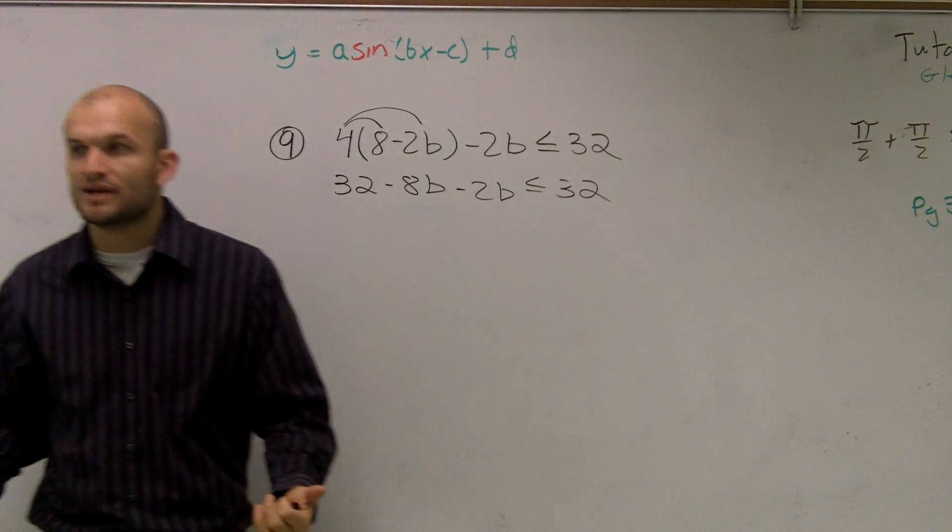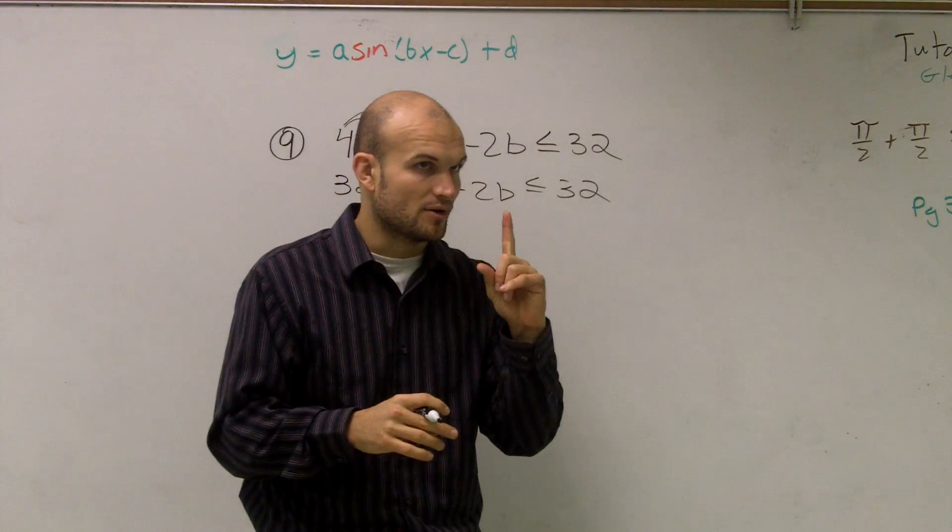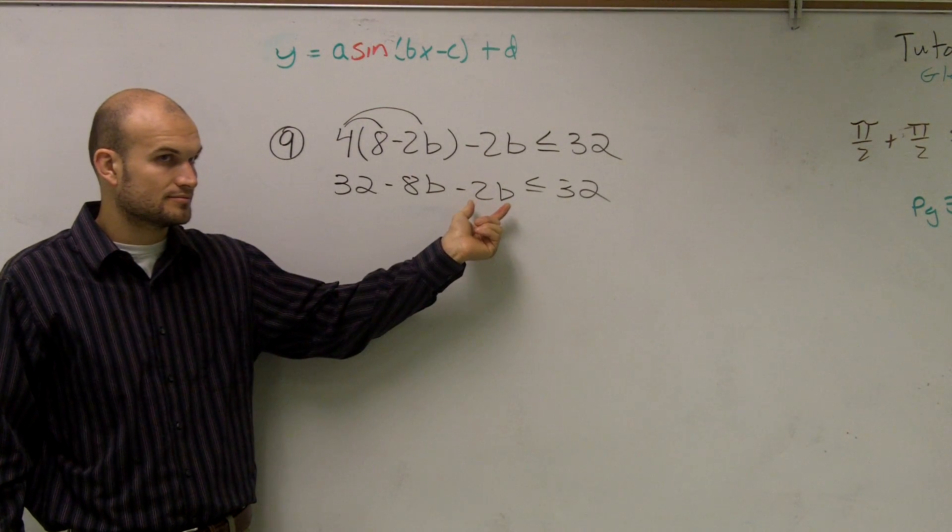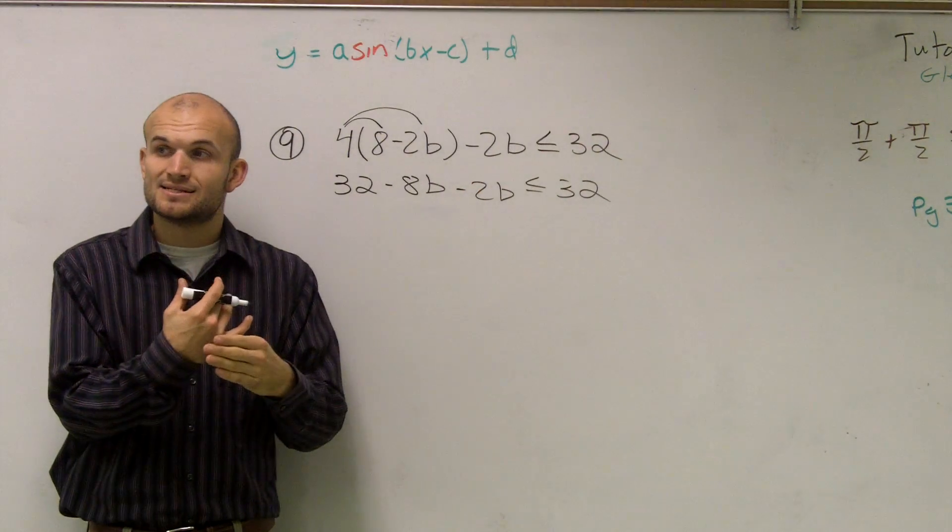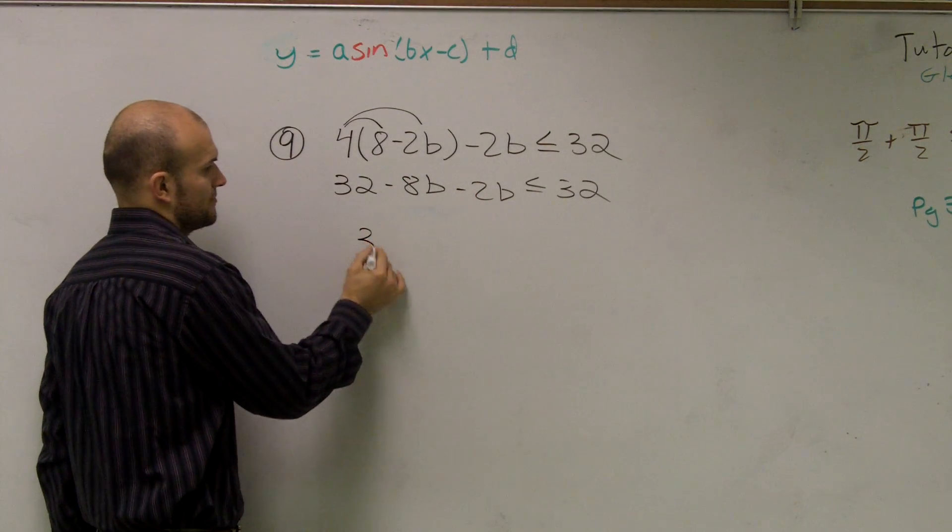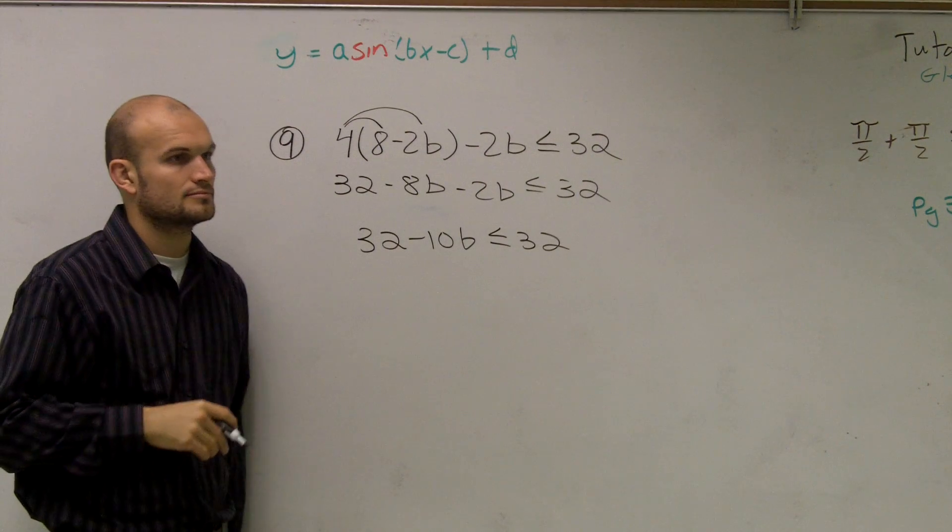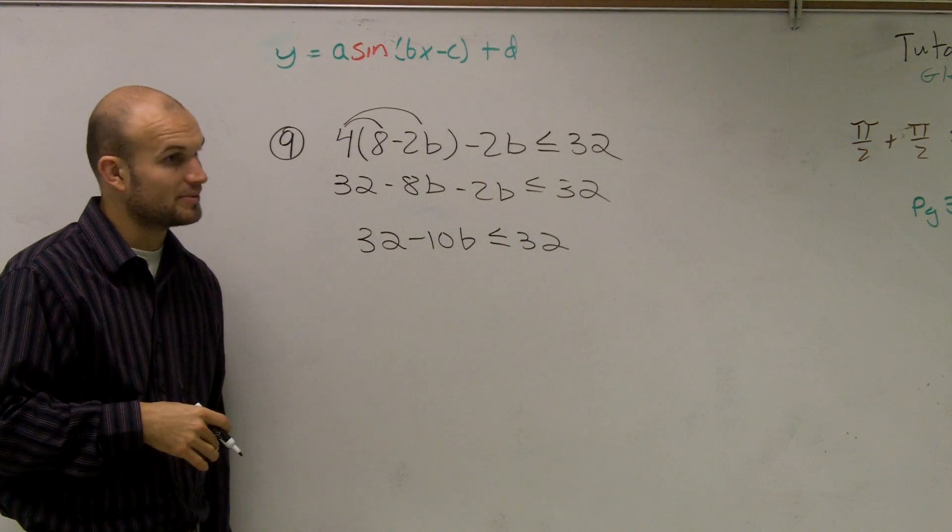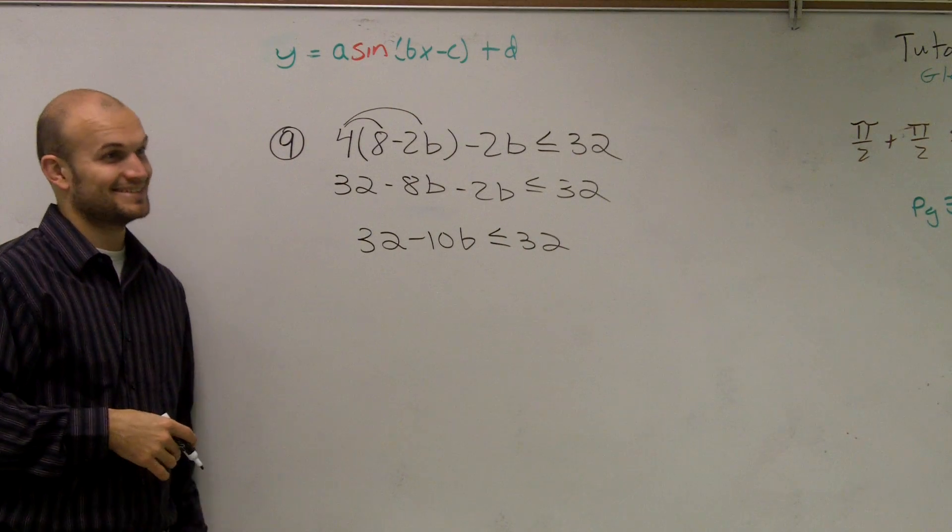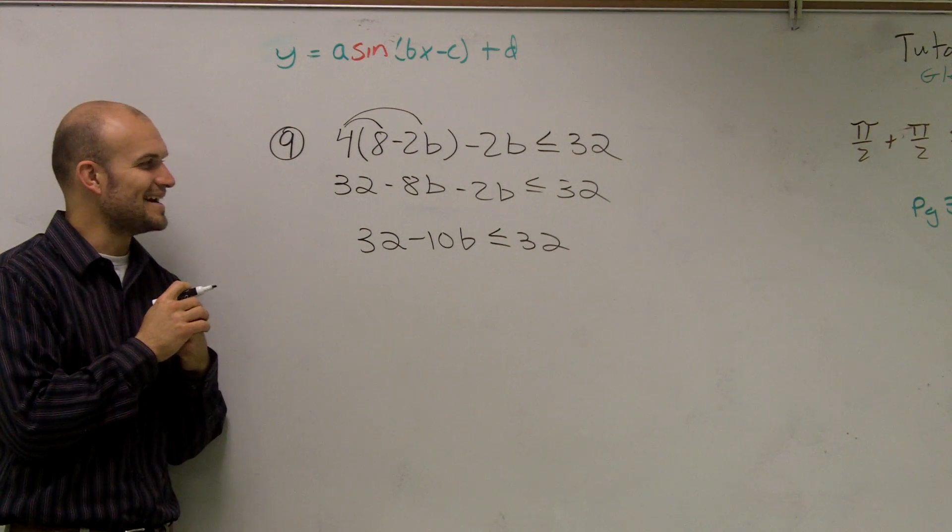Now remember, when we're solving inequalities, you're solving for one variable. Right now I have two of the variables: I have negative 8b and I have negative 2b. So what I need to do is combine these so I can get it down to one variable. If I have negative 8b minus 2b, that's going to give me negative 10b.